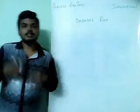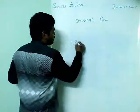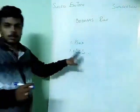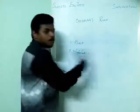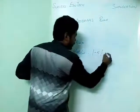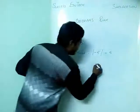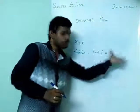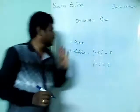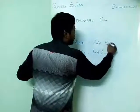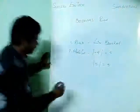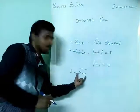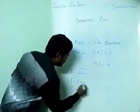There are two more operations beyond the BODMAS rule: the bar operation and the modulus operation. The modulus gives the positive value — for example, the modulus of negative 5 is 5, and the modulus of positive 5 is also 5. The bar is like a line bracket; for example, in the expression '3 minus (2 plus 1) bar', you do the bar first to get 3 minus 3, which equals 0.